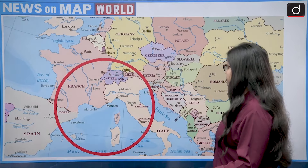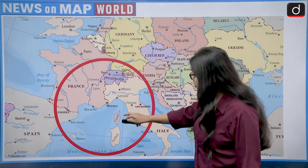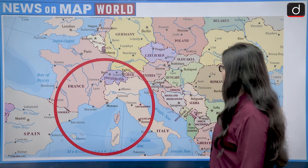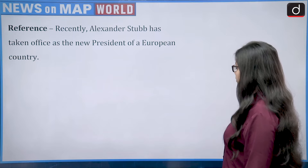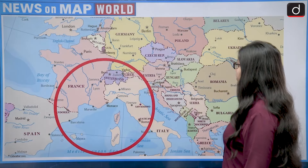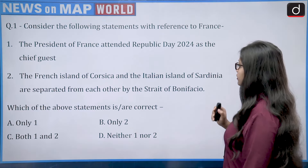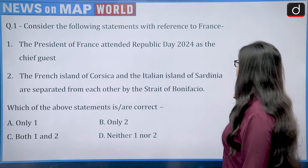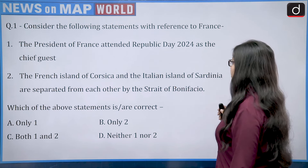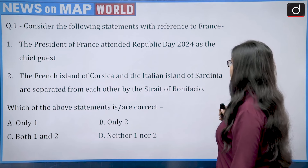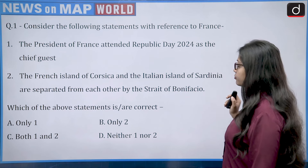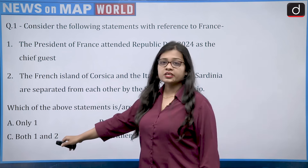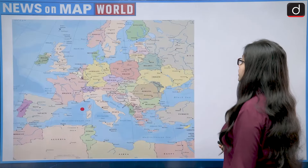Looking at the map: Corsica belongs to France, Sardinia belongs to Italy, and in between them lies the Strait of Bonifacio — so Statement 2 is also correct. Both statements are correct, making the answer Option C, that is both 1 and 2.